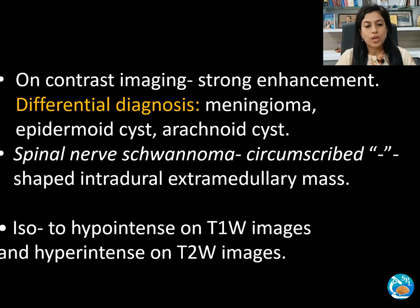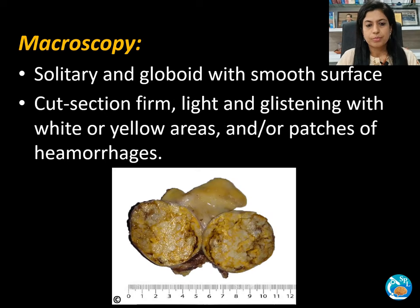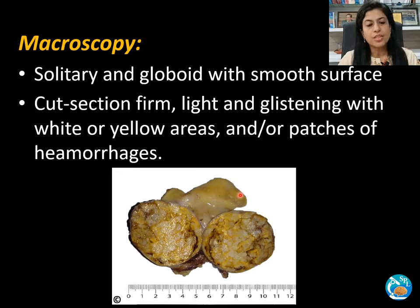A differential diagnosis for schwannoma includes meningioma, epidermoid cyst, and arachnoid cyst. Spinal nerve schwannomas present as well-circumscribed dumbbell-shaped intradural extramedullary masses causing variable cord compression. These are iso- to hypointense on T1 and hyperintense on T2-weighted images. Macroscopically, these are solitary globoid masses with a smooth surface; the cut section shows firm, light, glistening tissue with white or yellow areas and with or without patches of hemorrhage.